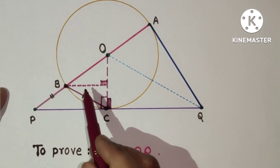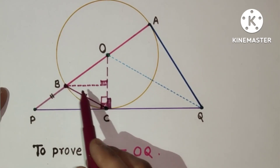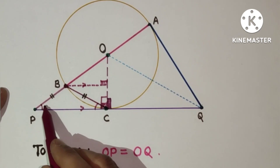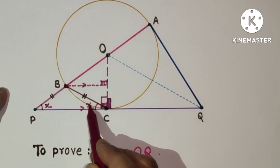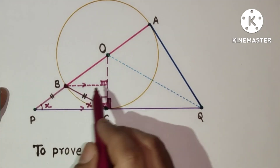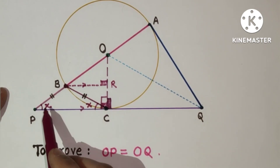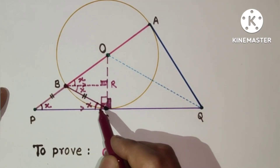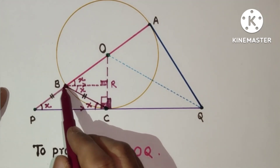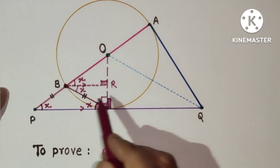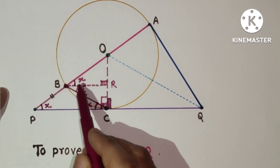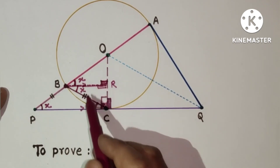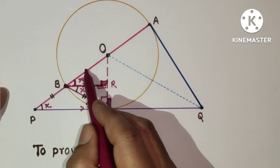We drew the perpendicular, and this is 90°, this is 90°, so these two lines are parallel. Because BP equals BC, this angle equals this angle. Let us suppose this is X, so this will also be X. PC is parallel, and BR is parallel to PC. This X equals this X because of corresponding angles, and this X equals this X because of alternate angles. In triangles OBR and BRC, BR is common, this angle equals this angle, and both have 90°, so by the angle-side-angle test these two triangles are congruent.